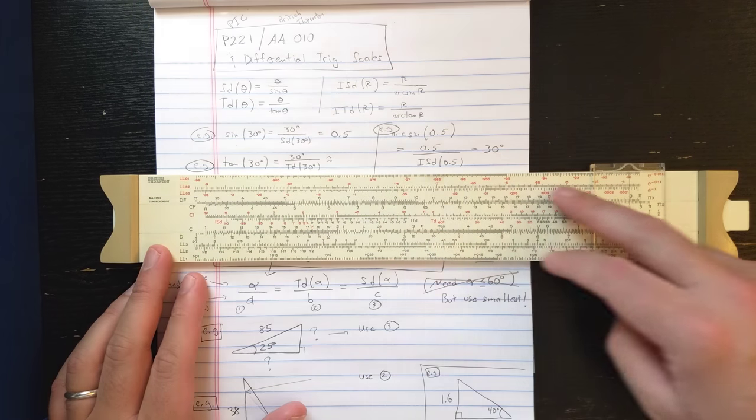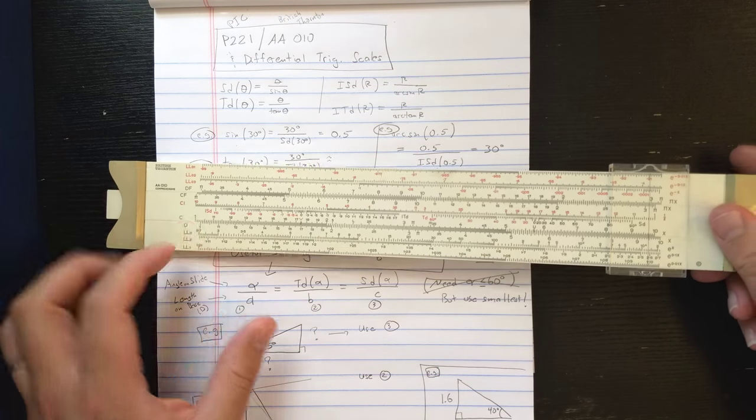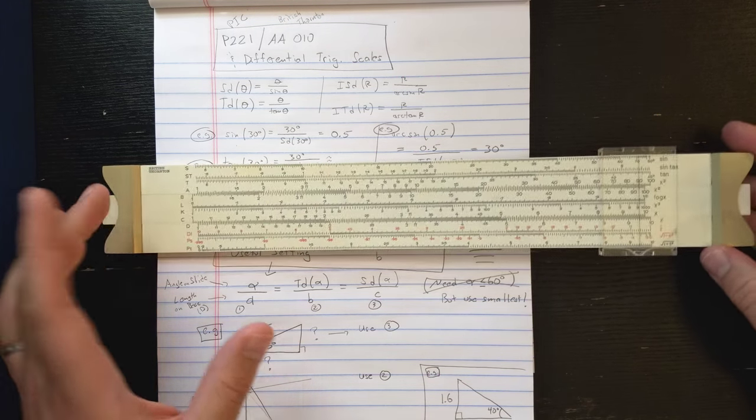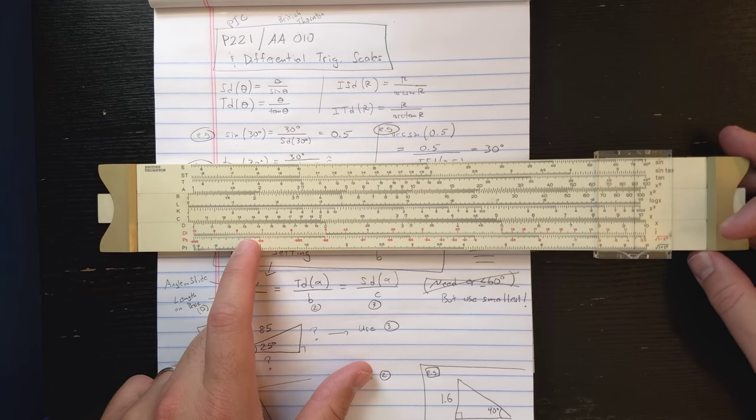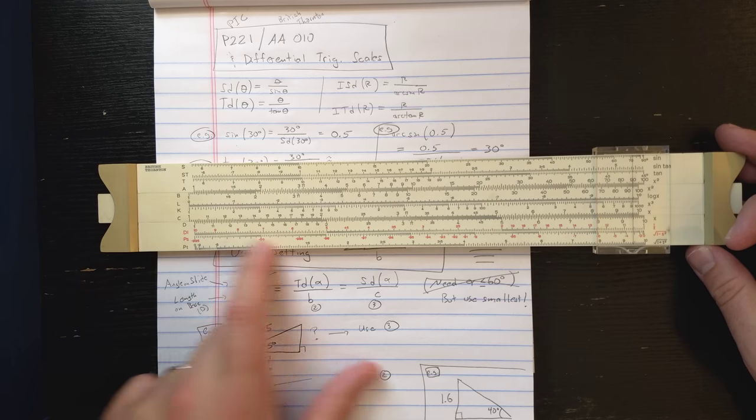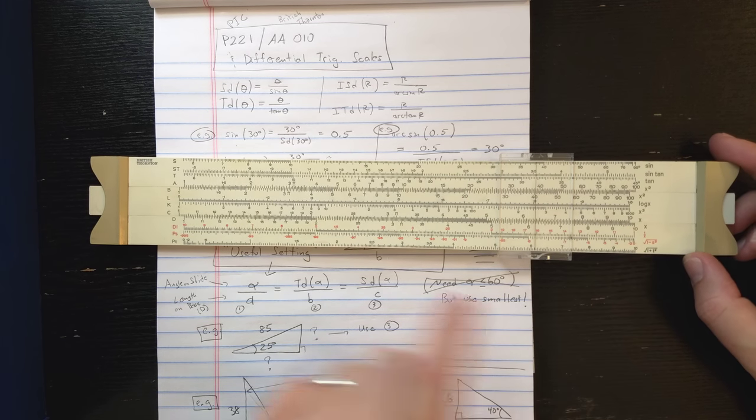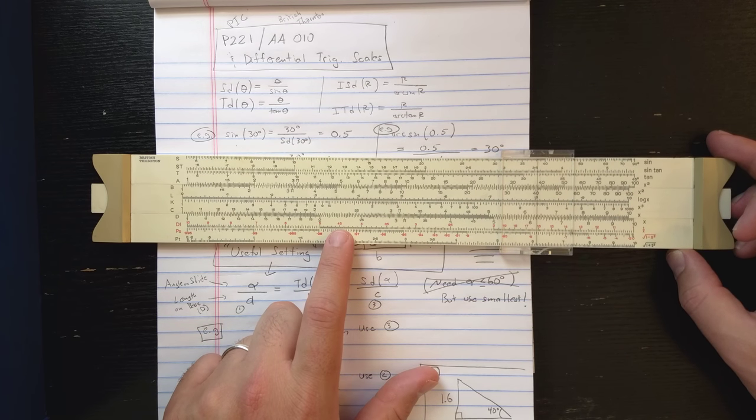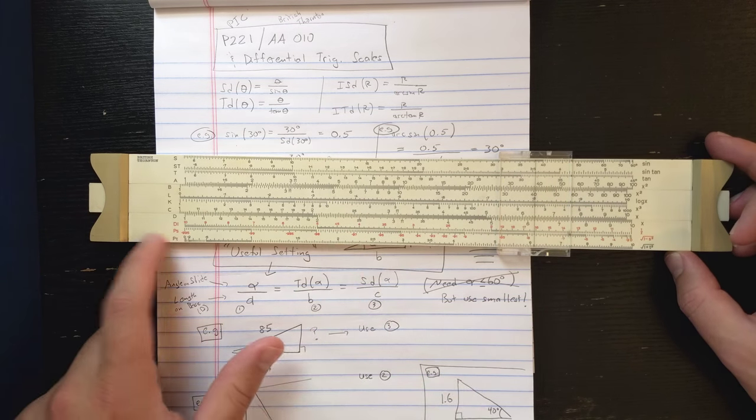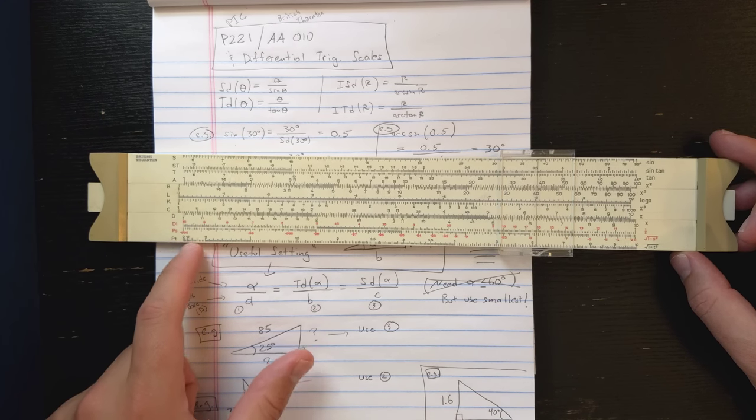It's a log log slide rule, six log log scales. It's got folded scales, although it's missing CIF. It's got your standard complement of trigonometric scales on the back, except interestingly it has the second Pythagorean scale for square root one plus T-square. We just saw this scale appearing on the Flying Fish 1003, a little bit of a rare Pythagorean scale, but otherwise pretty standard scale layout here, including the DI.